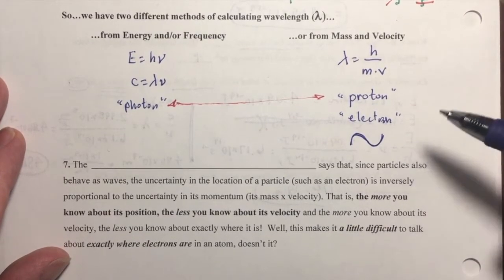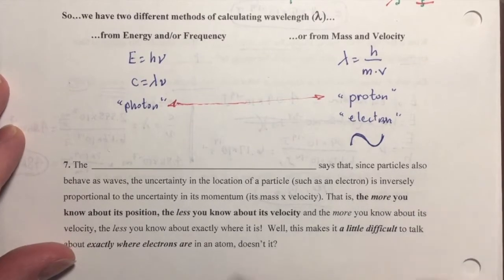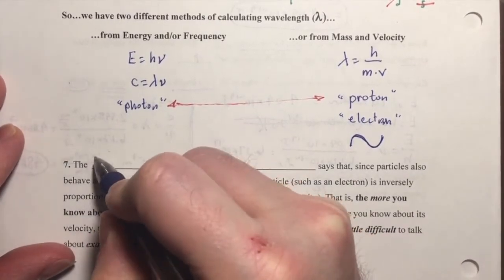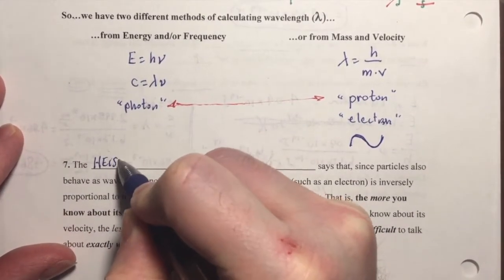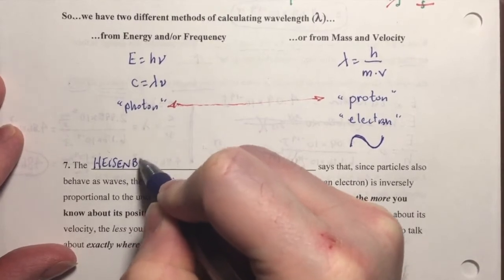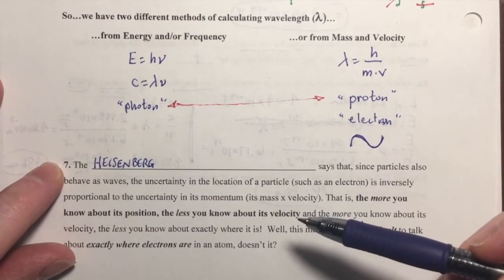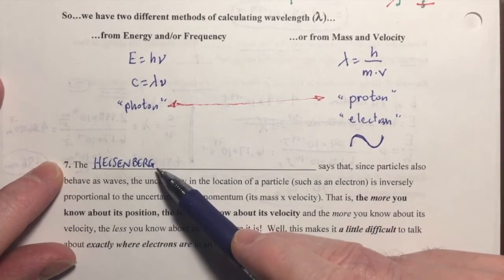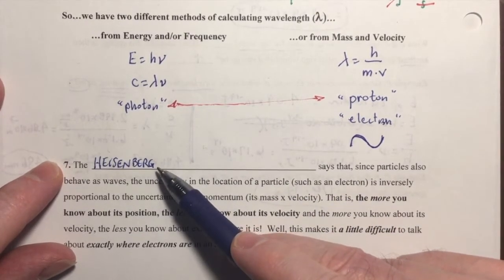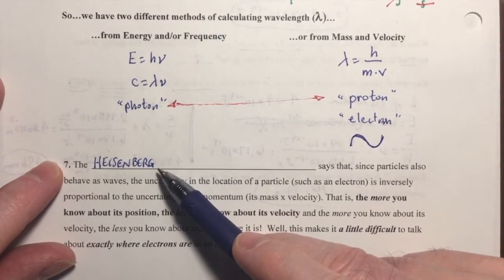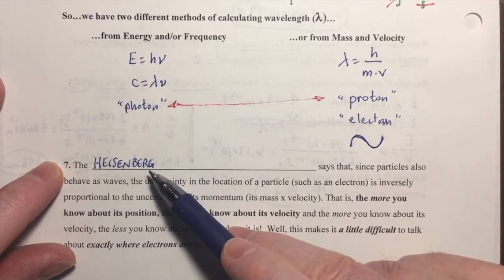So, one of the early researchers in quantum mechanics, his name was Heisenberg. And if you've watched the TV show Breaking Bad, this is the Heisenberg that Walter White in that show chose his name from.